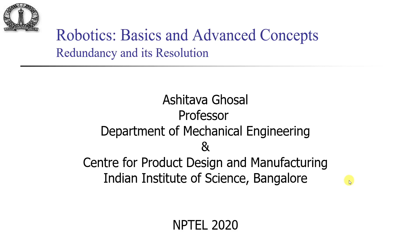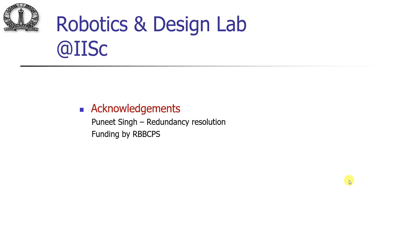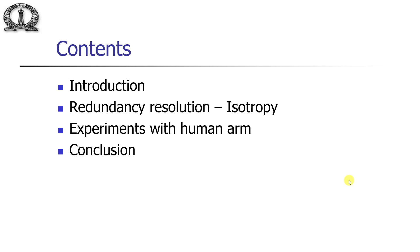In this week we will look at how redundancy is resolved in human arms. This work has been done by Puneet Singh, a student in the robotics lab and the center for neuroscience at IISc, with funding from the Robert Bosch Center for Cyberphysical Systems. In this lecture we will introduce redundancy, look at redundancy in the human arm, discuss redundancy resolution to make velocity distribution isotropic, and then show experiments with the human arm and conclusions.